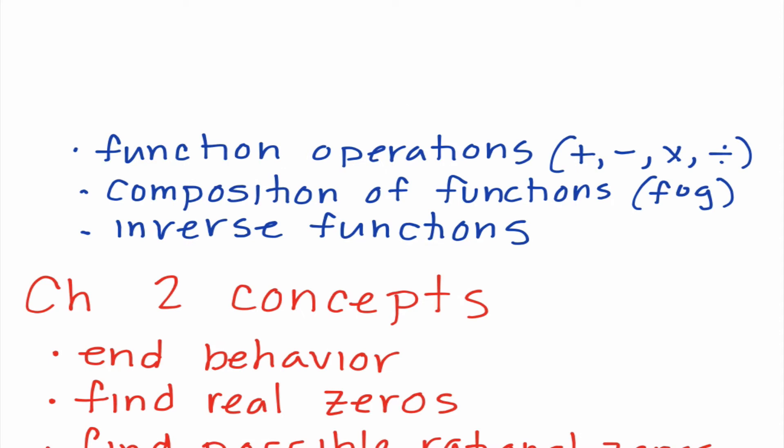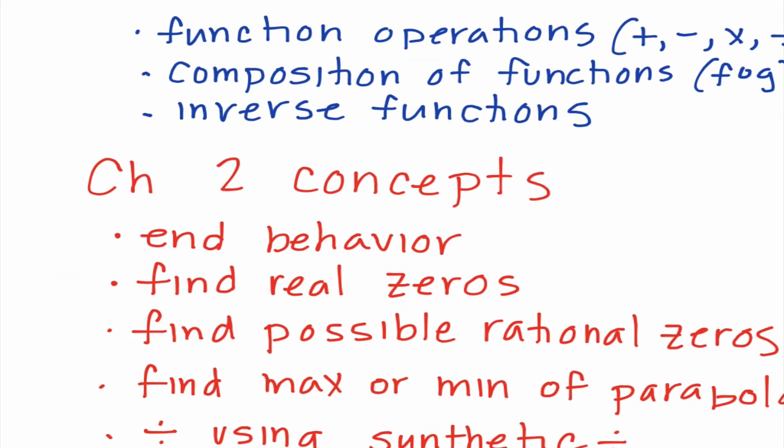The rest of chapter one, function operations. Knowing how to add, subtract, multiply, and divide functions together. So like f of x equals x squared plus 5x minus 1, g of x equals 3x squared minus 1, how would we add those, how would we subtract those. Composition of functions, that's when it looks like f of g of x and that open circle is what that composition operation looks like. That's when we input one function into the other function, so we replace x with an expression. Last thing we need to know are inverse functions. So that's when we switch x and y and solve for y.